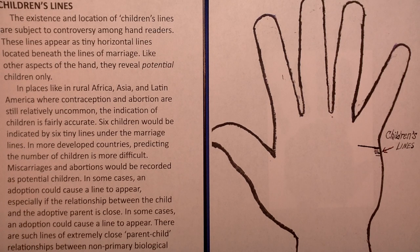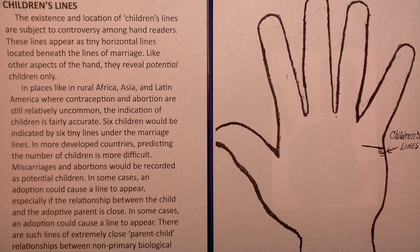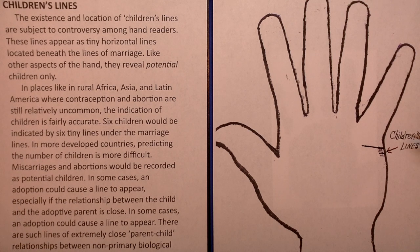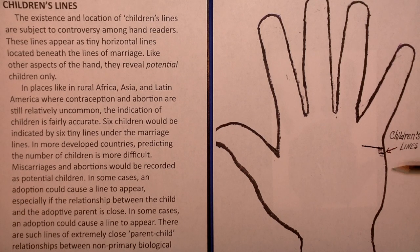So we go on now to children's lines. The existence and location of children's lines are subject to controversy among hand readers — we all don't agree on everything. These lines appear as tiny horizontal lines beneath the lines of marriage. Here's one line — strong marriage. You see these lines here; you've got four of them. Like other aspects of the hand, they reveal potential children only.